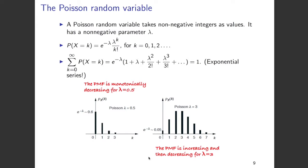Now let's look at the PMF of a Poisson random variable. Depending on the value of lambda, the PMF can have different forms. For example, with lambda equal to 0.5, the PMF is monotonically decreasing. However, if you have lambda equal to 3, the PMF increases initially and then decreases. So depending on the value of lambda you can see different kinds of behavior for the Poisson random variable.